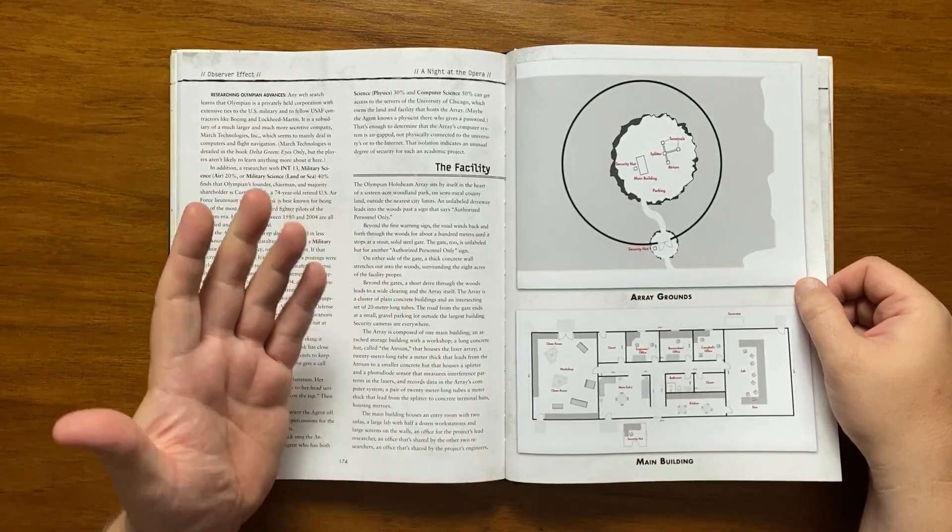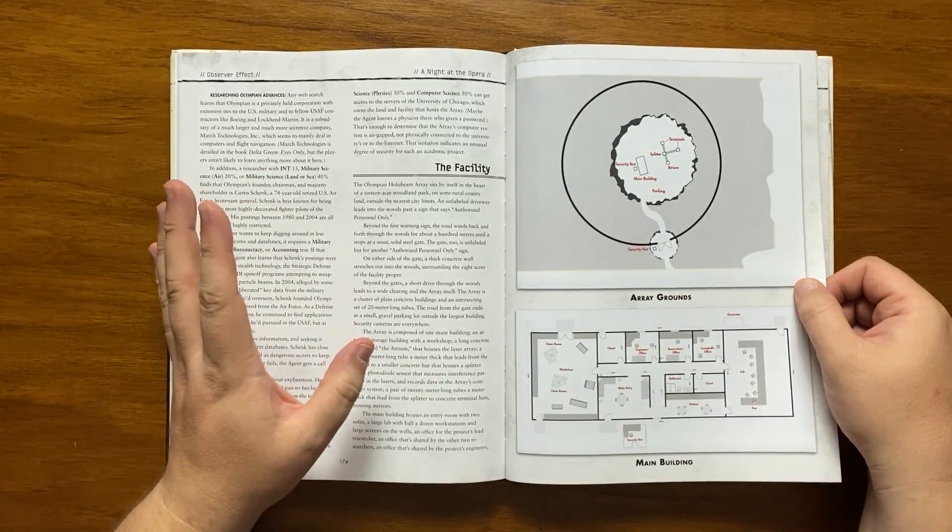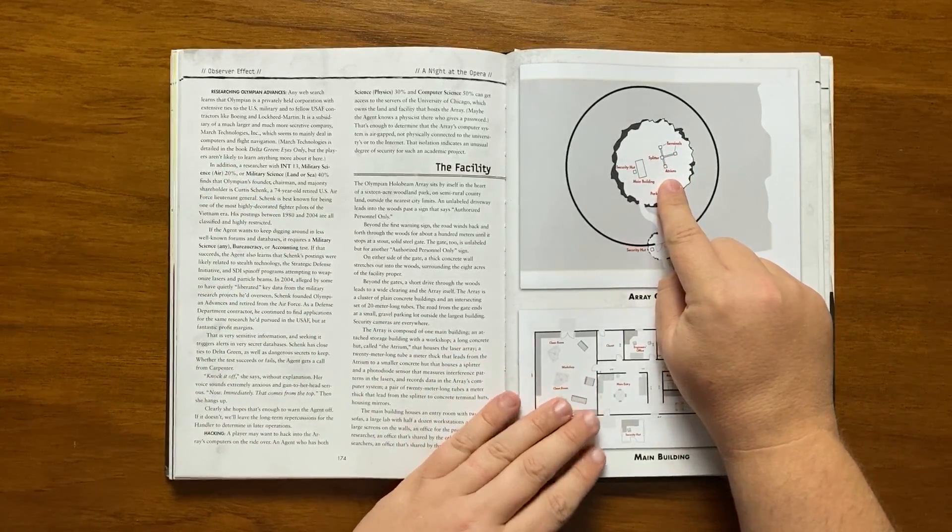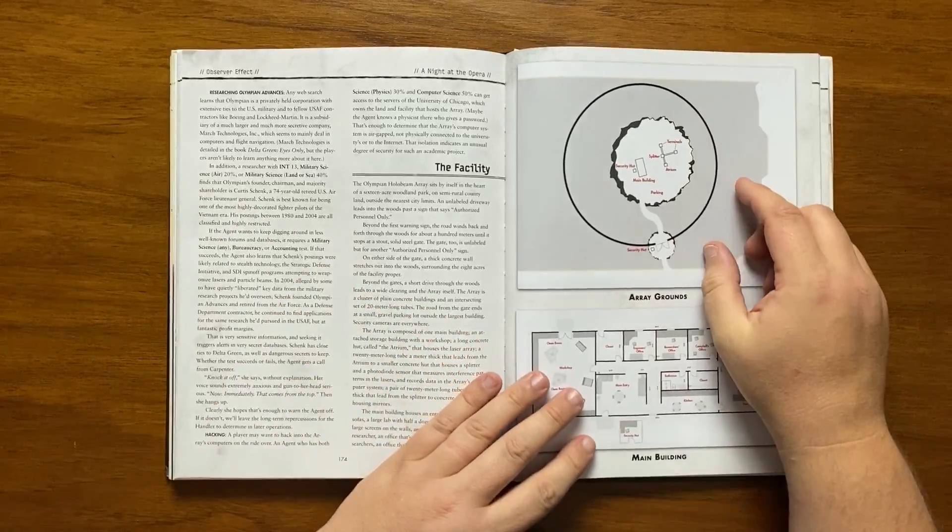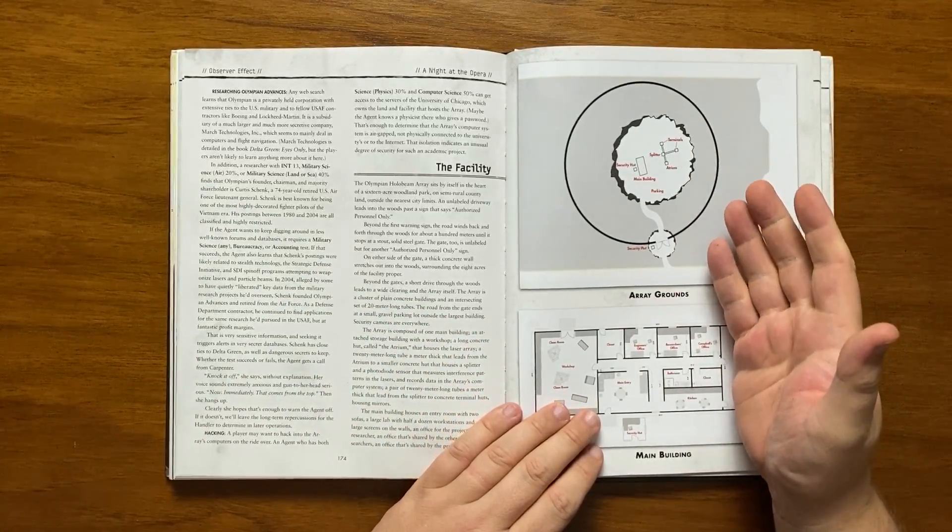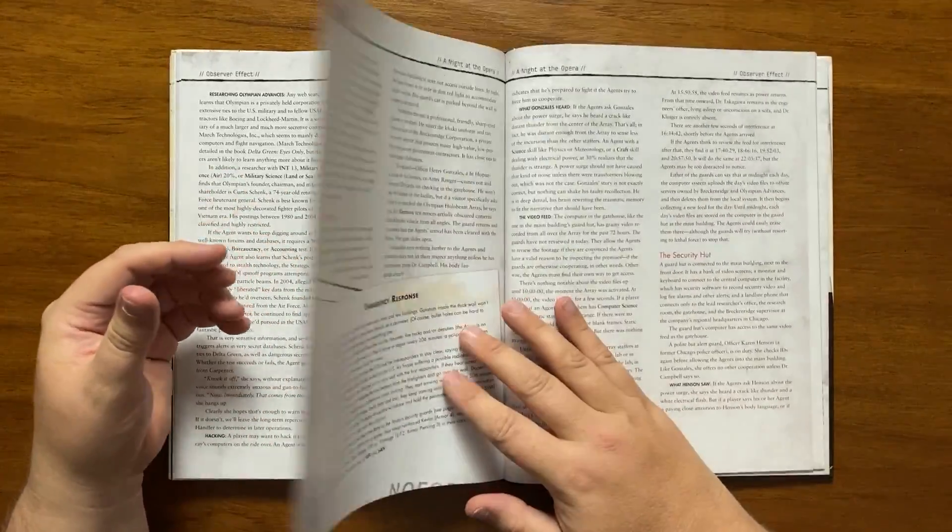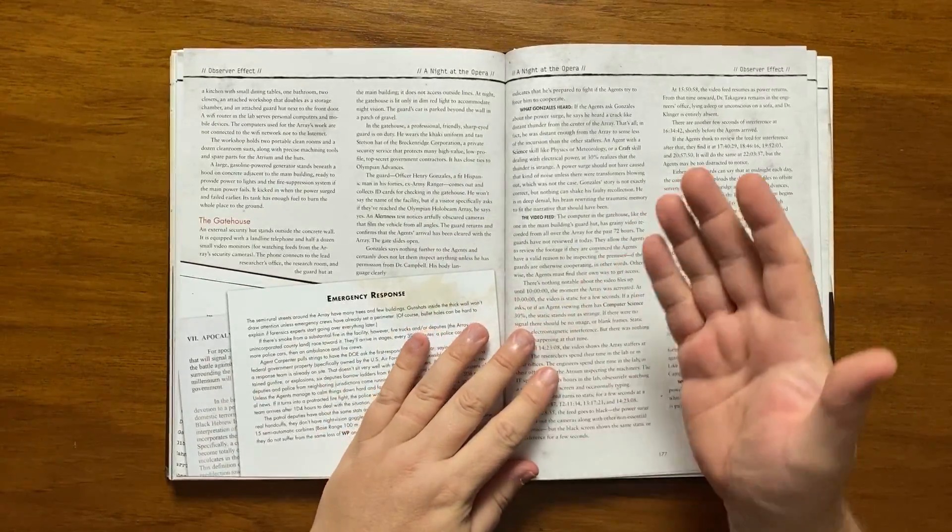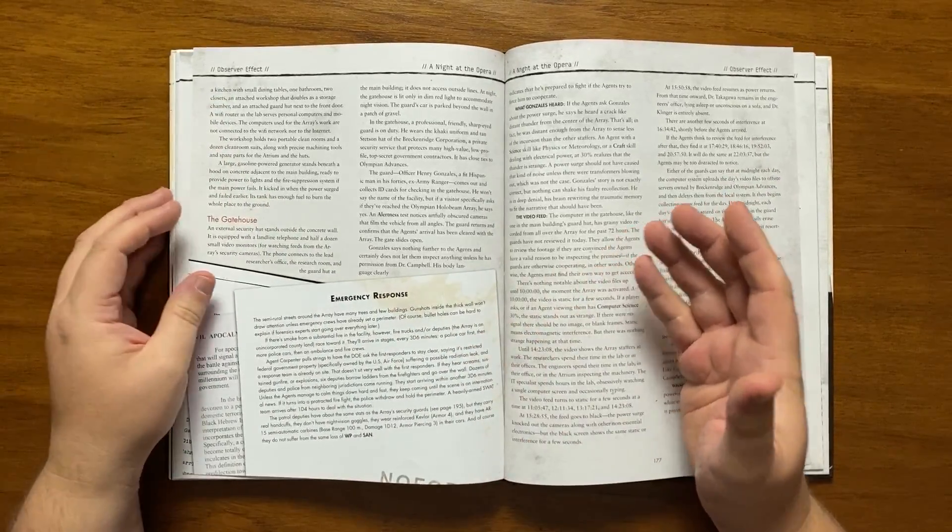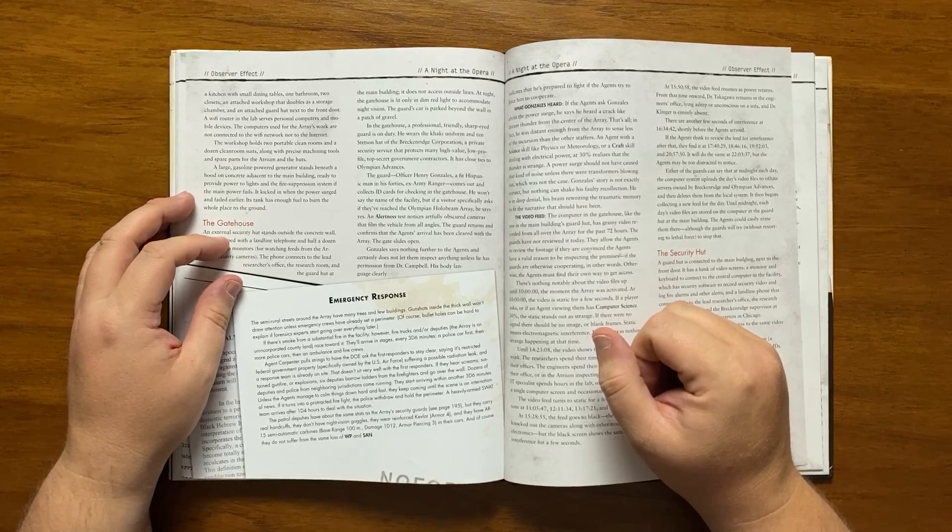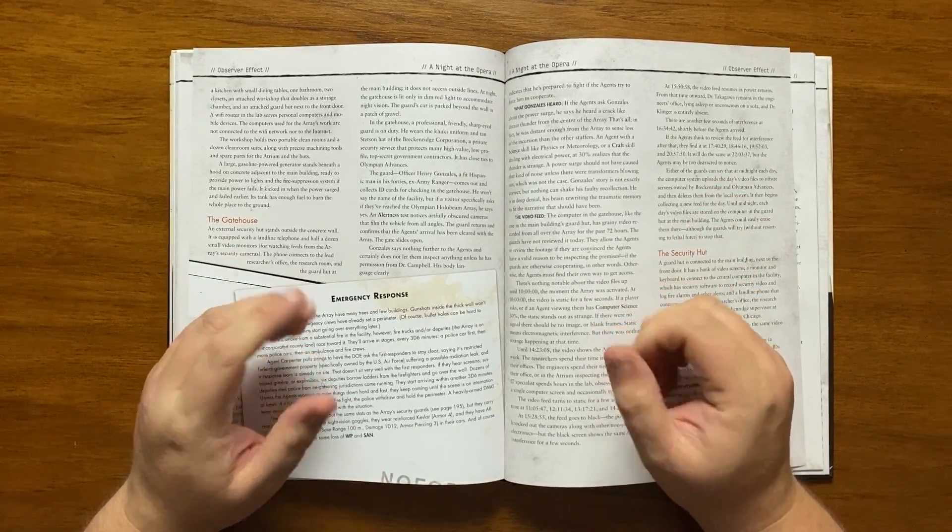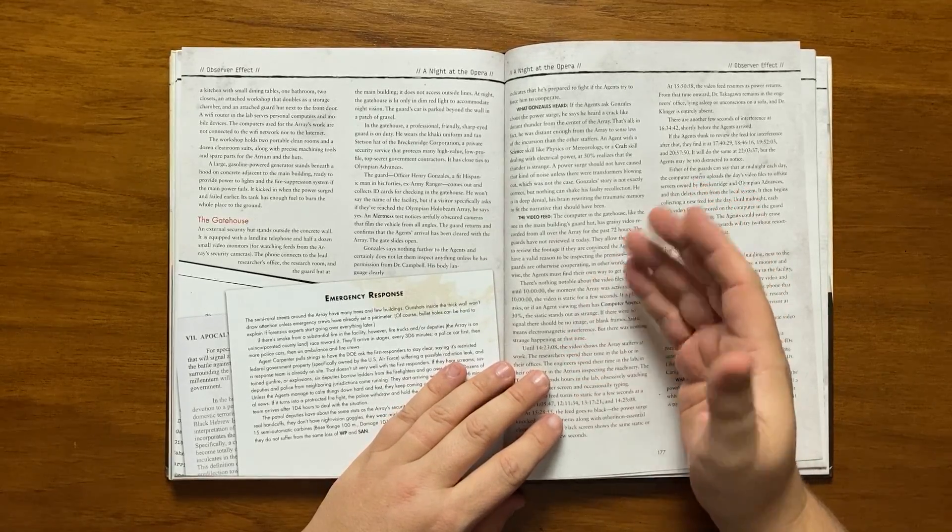That leads to a smaller concrete hut that houses a splitter and photodiode sensor for the measurement and recording of data. The splitter leads to concrete terminal huts that house mirrors. The main building has a small comfortable entry room and a large lab replete with workstations, large wall screens and separated off offices for the lead researcher, researchers and engineers. There is a kitchen with dining tables, a bathroom and a workshop. There is a router that serves personal computers and phones. Importantly the Array's computers are not connected to the internet. The Array also has a gas power generator ready for if main power fails.